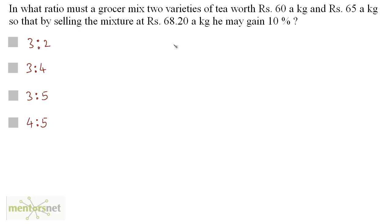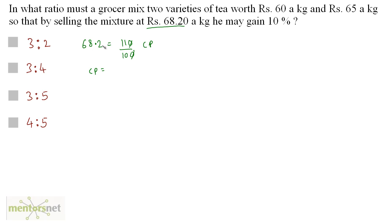We have been given the selling price of this mixture. If he sells the mixture at this selling price, he gains 10%. So let us first find out the cost price. The selling price is 68.2, which is equal to a 10% increase in the cost price — that is, 110% of the cost price. So cost price equals 68.2 × 10 = 682 divided by 11, which equals 62.